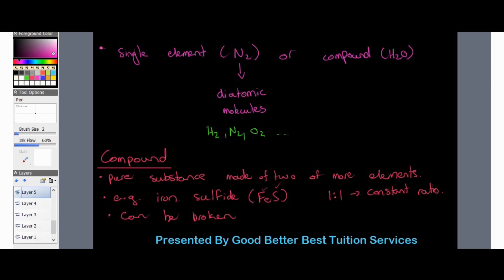A compound is a pure substance made of two or more elements. It is usually a metal bonded to a non-metal — for example, iron sulfide, where iron is the metal and sulfur is the non-metal. This compound exists in a ratio of one to one. A compound can also be broken apart: just as we joined iron to sulfur to make iron sulfide, we can separate them again through a reverse reaction.